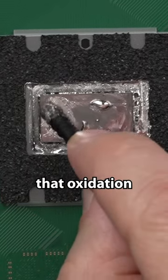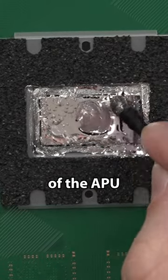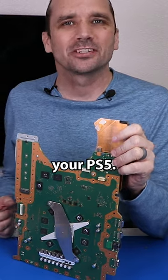And now you can see that that oxidation is all gone. And the liquid metal has contacted the entire surface of the APU. And that's what it should look like. So that is how to re-spread the liquid metal on your PlayStation 5.